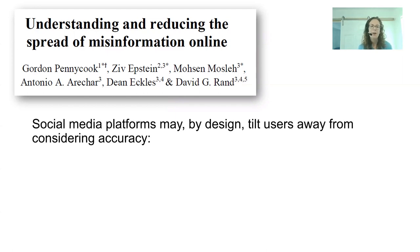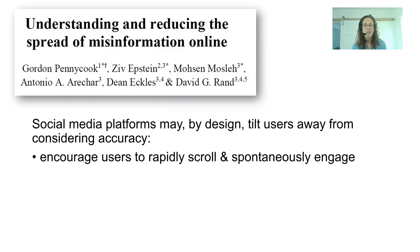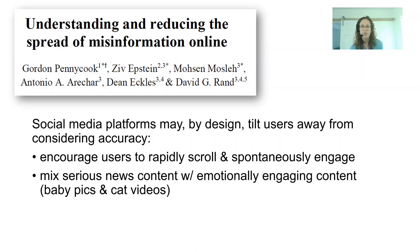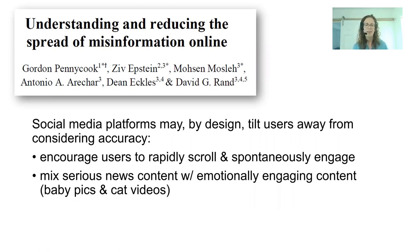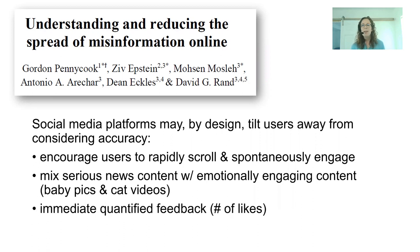The idea was that just by prompting people to think about trustworthiness as something they should be evaluating, they saw better results. The paper notes that social media platforms by design often tilt users away from considering accuracy — they encourage us to rapidly scroll and spontaneously engage. They mix very serious news content with emotionally engaging content like baby pictures and cat photos, and the immediate quantified feedback in the form of number of likes keeps us from really reflecting on accuracy.